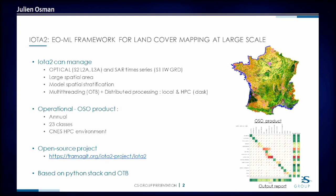It's already used in production to produce the OCS project, which is a land cover map of France that's produced every year. It contains 23 classes. It's also an open source project, so you can check it out at this address.